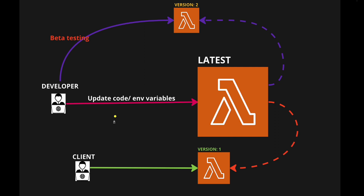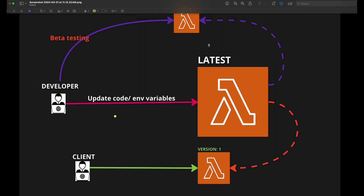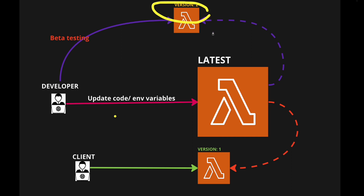Versions allow us to do beta testing without impacting the deployed or stable production version. For example, say you have a Lambda function with version 1 already deployed — that's what the client is currently using in production. At the same time, you want to add a new feature and test it without impacting version 1. That's where versions are used. The developer updates the code and creates a new version — version 2 — and does beta testing on top of version 2.